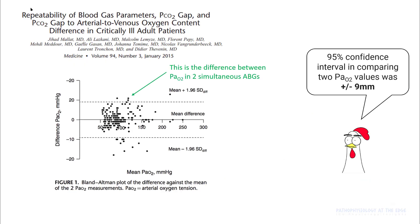The repeatability of blood gas parameters is also questionable. In a study by Melet et al., they looked at various ABG parameters in two simultaneous ABGs. Looking at the PO2 level differences between the two ABGs, the scatter is as high as 20. On average, the 95% confidence interval comparing two PO2 values was plus or minus 9 mmHg. That means if a PO2 is 65, it can lie anywhere between 56 to 74.